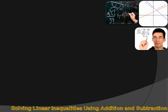With an equation, so long as we do the same thing to both sides, it's still going to be an equation. With an inequality, at least when dealing with addition and subtraction, if you do the same thing to both sides of the inequality, it's still going to remain an exactly identical inequality. We can use that principle to solve linear inequalities.